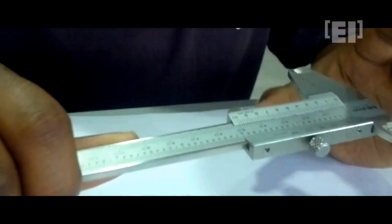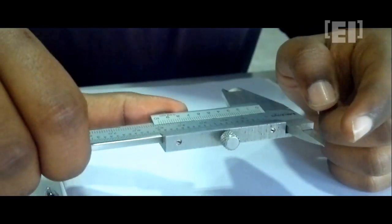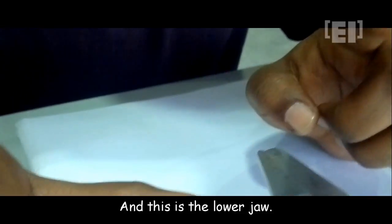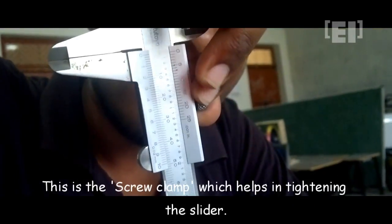The inner diameter of any object like a ball cap is measured by the upper jaws, while the lower jaw measures outer diameter like the diameter of a coin.